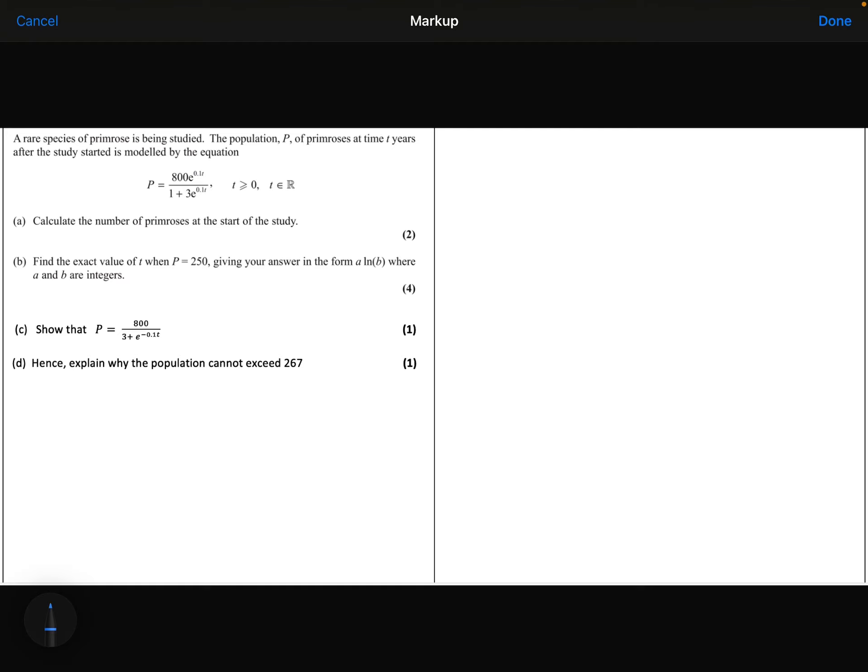So at the start of the study, I'm thinking that t is 0. So if I substitute that into my model, I can say that P is equal to 800 e to the power 0, divided by 1 plus 3 e to the power 0.